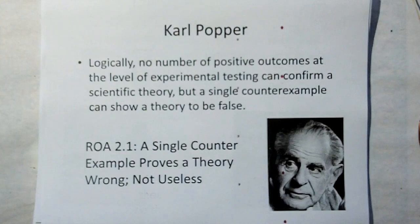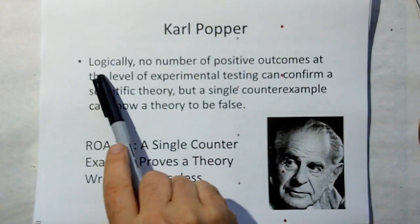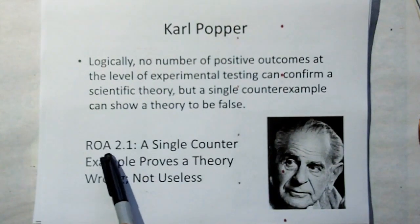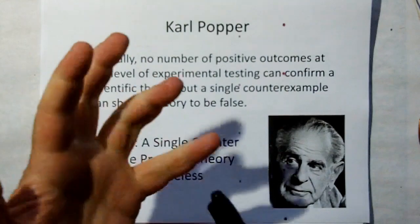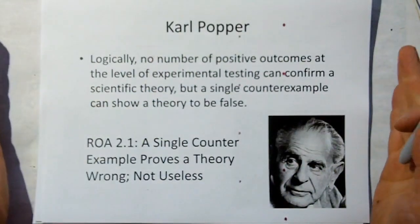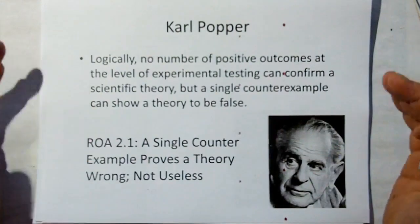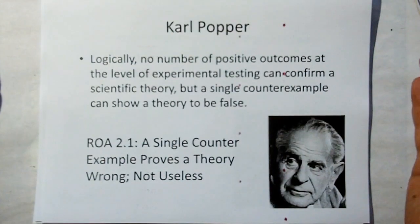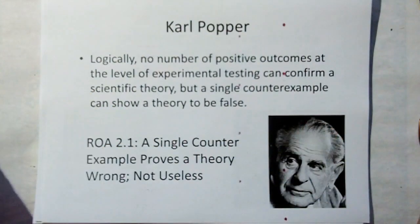Rule of Acquisition 2.1 is a continuation of Rule of Acquisition 1. In Rule of Acquisition 1, correct answers prove nothing except utility — from Karl Popper: no number of positive outcomes at the level of experimental testing can confirm a scientific theory, but a single counterexample can show a theory to be false. So Rule 2.1: a single counterexample proves a theory wrong, but not useless. Theories can be wrong but not useless — like Archimedes' Principle, which is definitively a wrong model, but we know it will work on stationary floating objects. We still say ships have a certain displacement, and we even still use the old Earth-centric model when teaching navigation that the sun rises in the east.